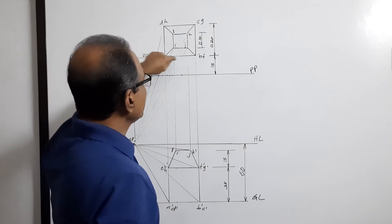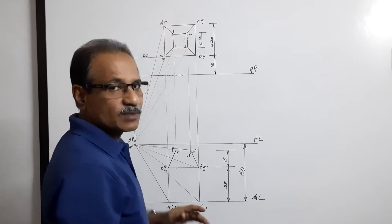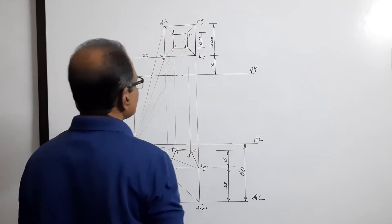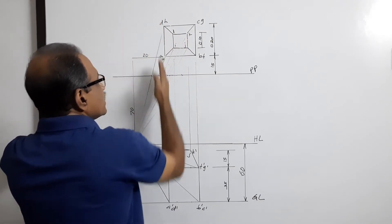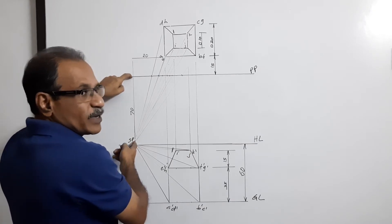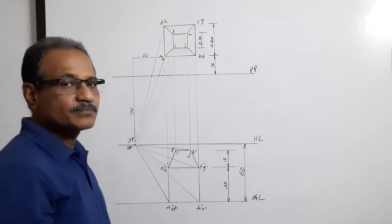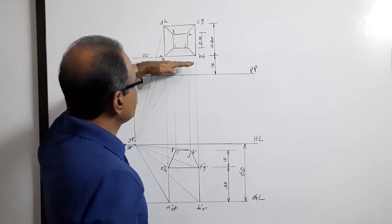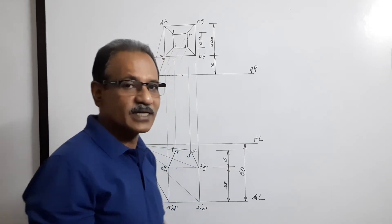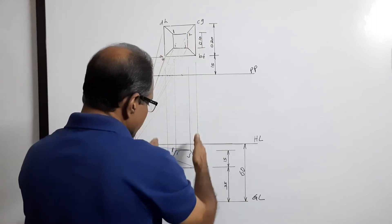Draw the picture plane, draw the 20mm square 15mm behind PP, then draw the 10mm square inside that. Draw the slanted edges of the frustum of the pyramid — that is the plan of the object, labeled a, b, c, d, e, f, g, h, i, j, k, l. Then 20mm away from this corner draw a vertical line as the central plane. Since one side is parallel to PP, the visual ray method will be easier, so we will use that. Drop SP down to get SP-dash, the elevation of SP.